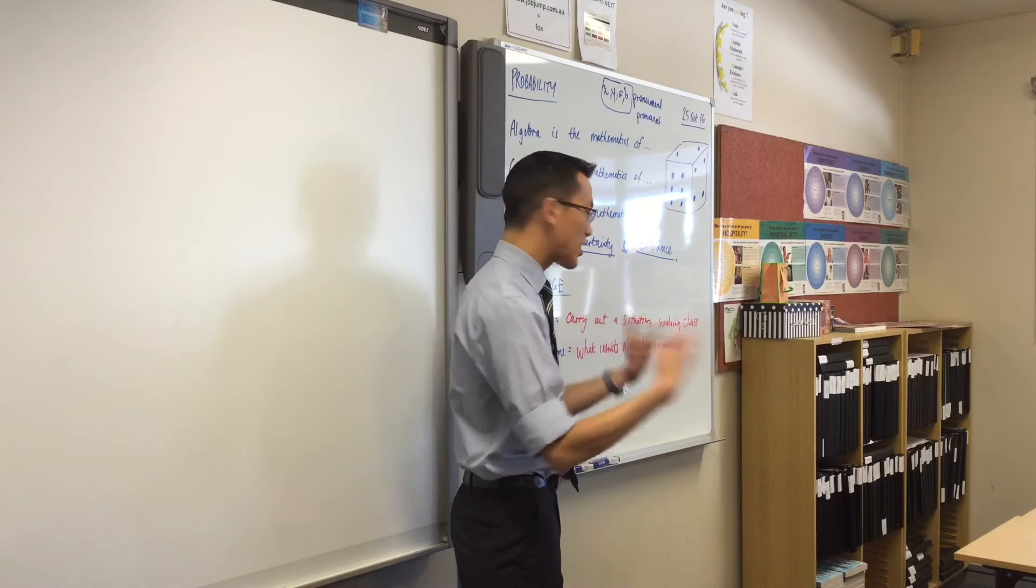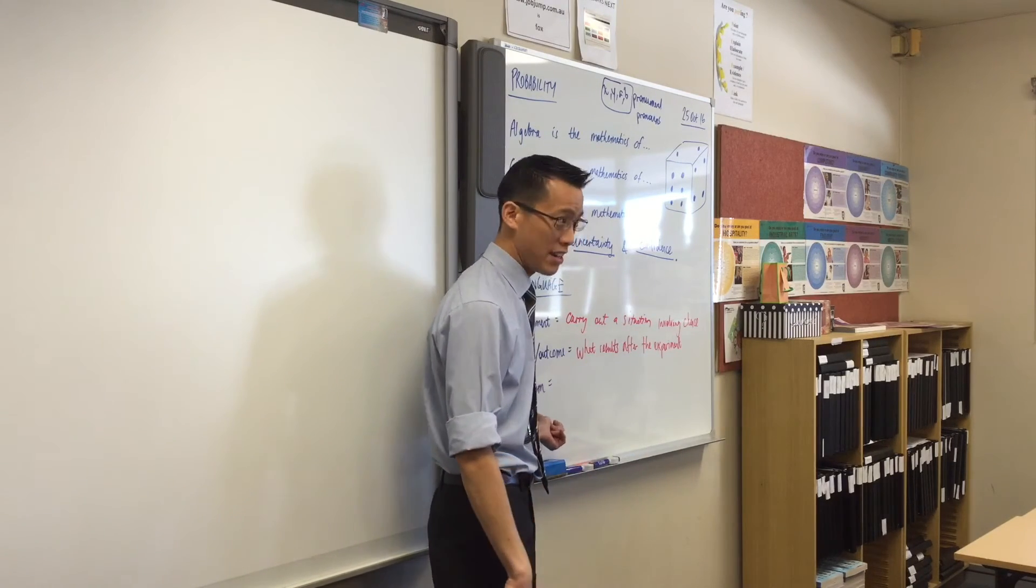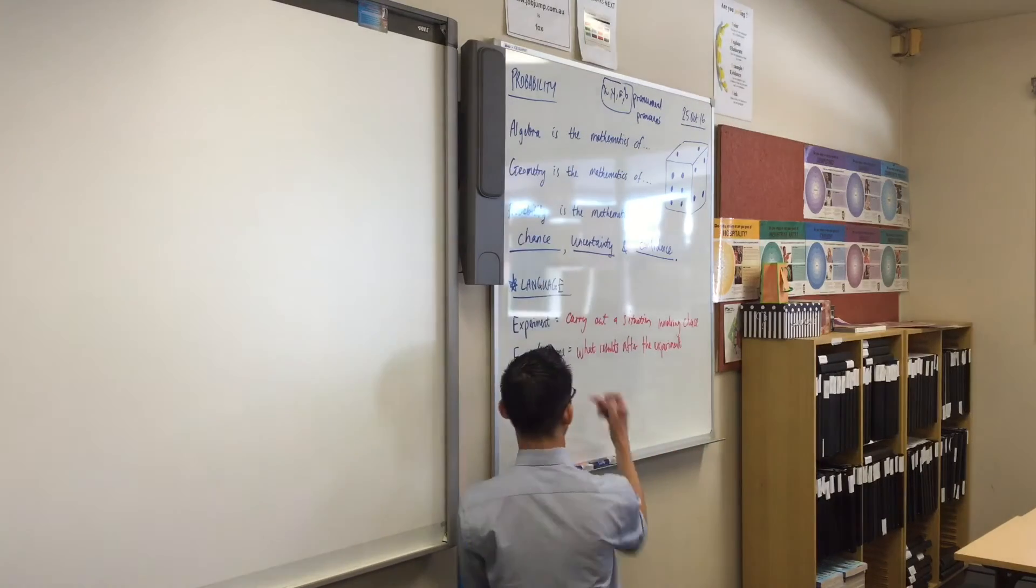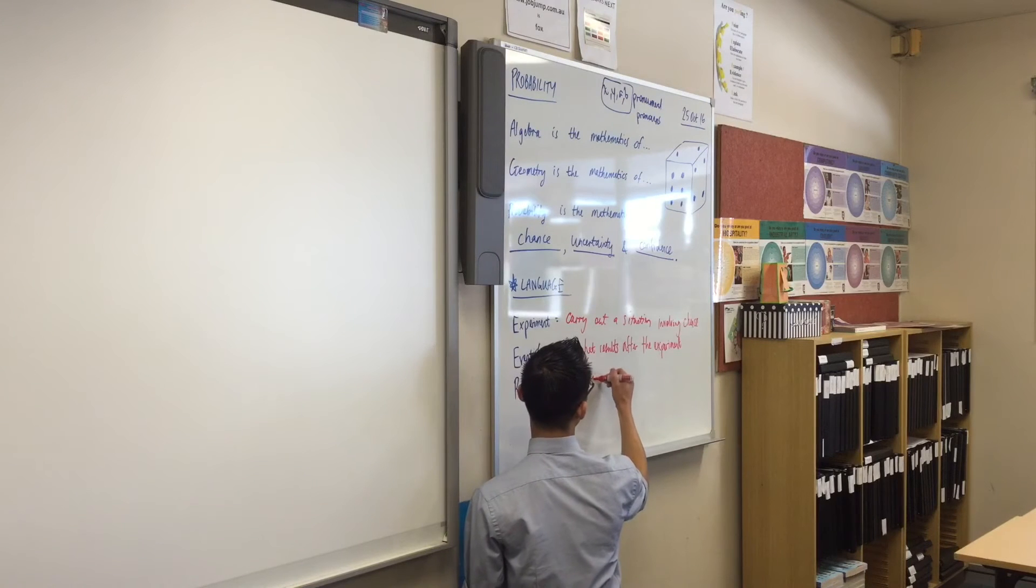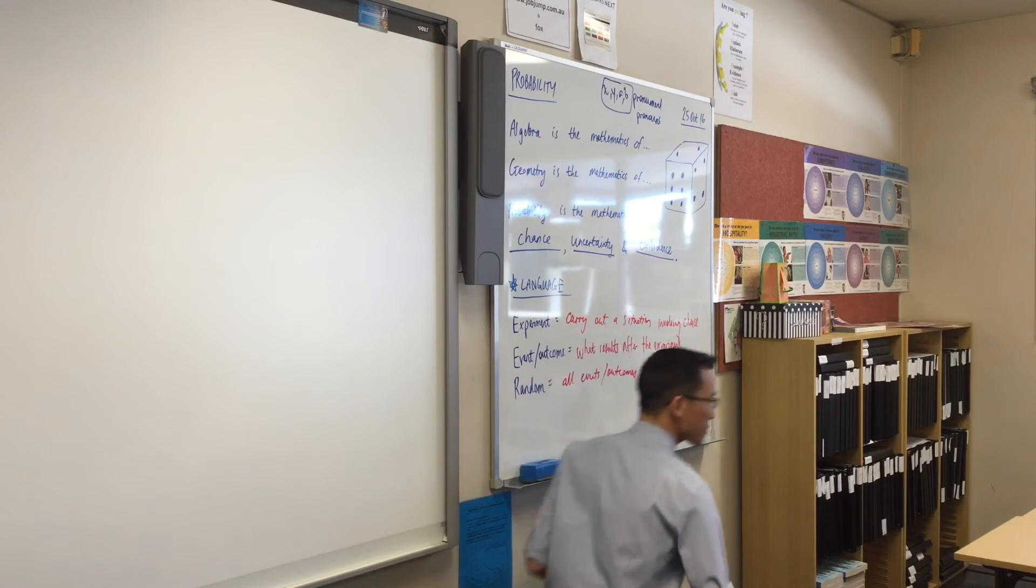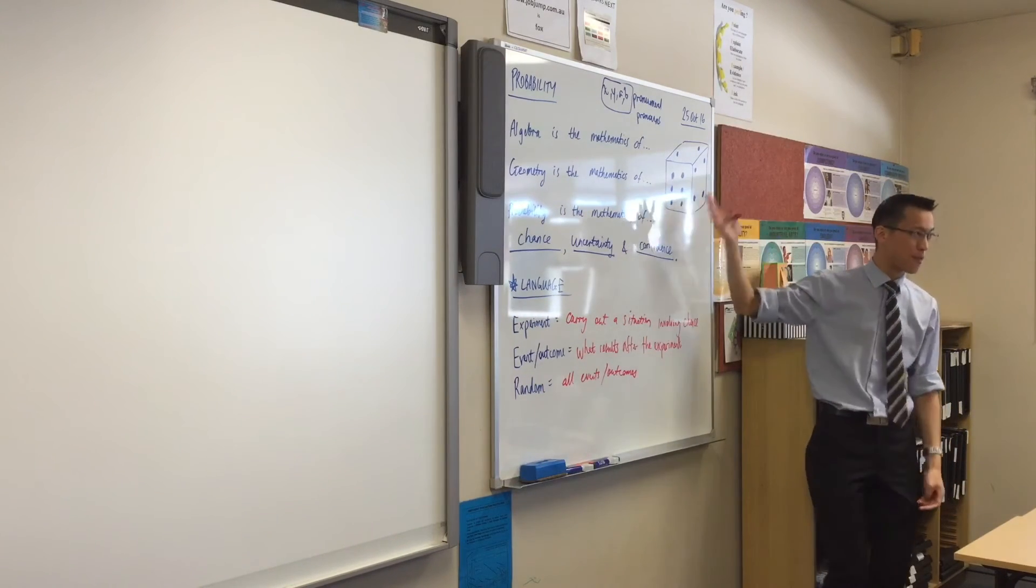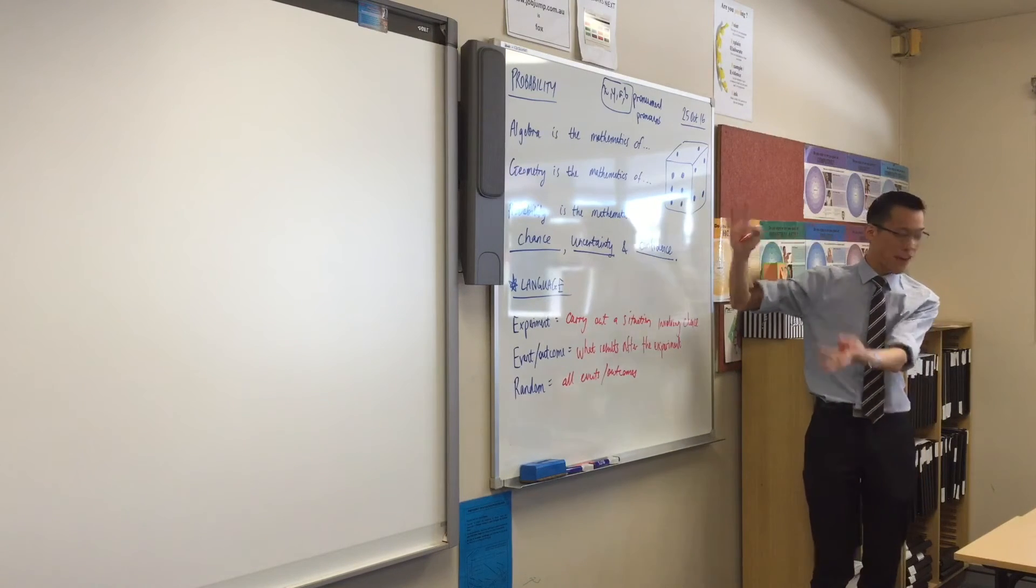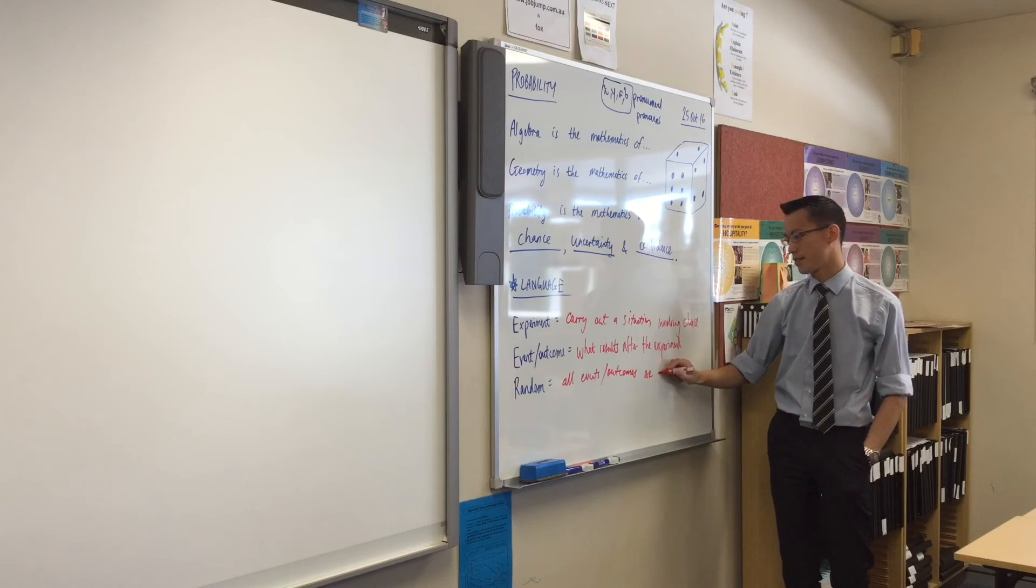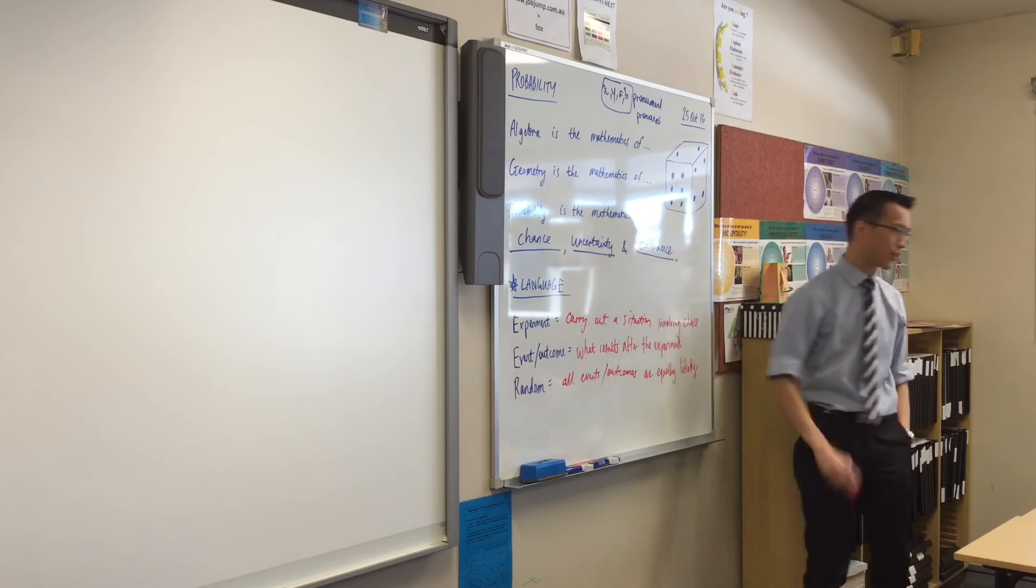Now, lots of experiments, the main kind we're going to be interested in, are what we call random, okay? So, a random experiment is where all of the events or outcomes, all events or outcomes, if they're all equally likely to happen, as you'd hope if you're using a die, right, and it's a fair die, then all events and outcomes have an equal chance. They're equally likely.